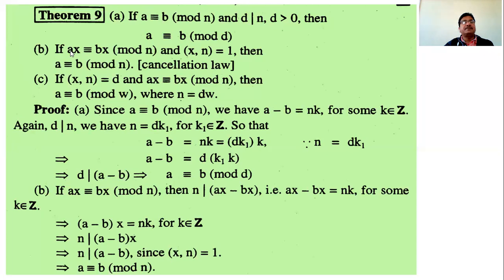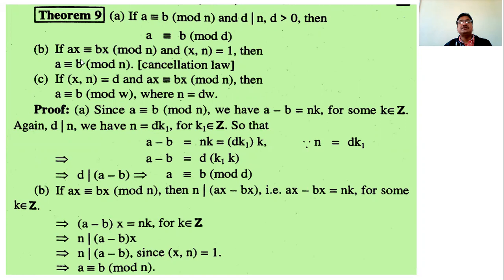Theorem B: if ax is congruent to bx modulo n, and the greatest common divisor of x and n is 1, then prove that a is congruent to b modulo n. This is called the cancellation law — we cancel x, but only when gcd(x, n) equals 1.